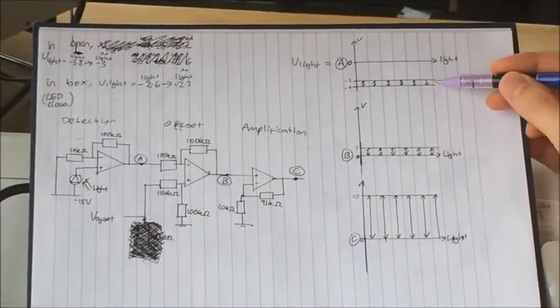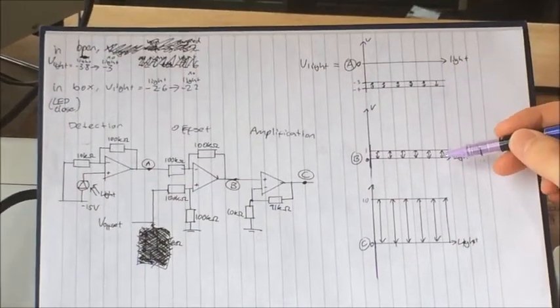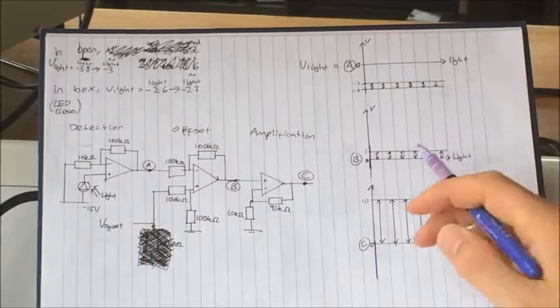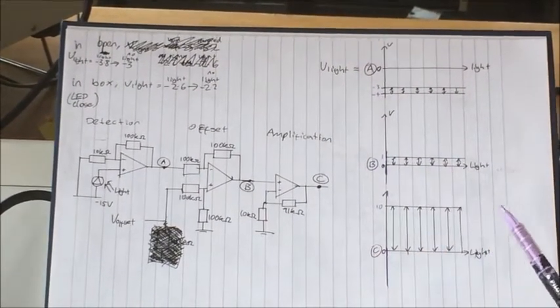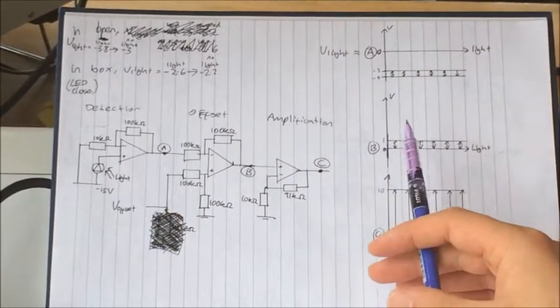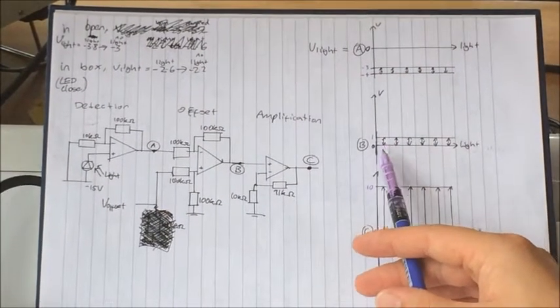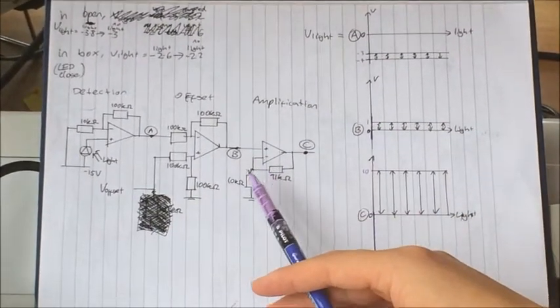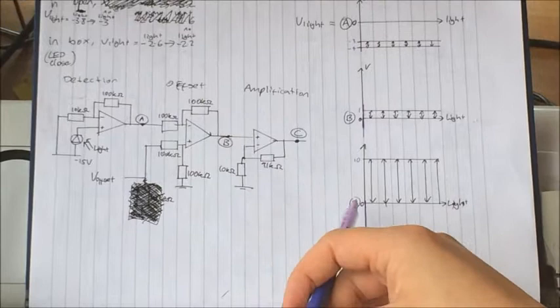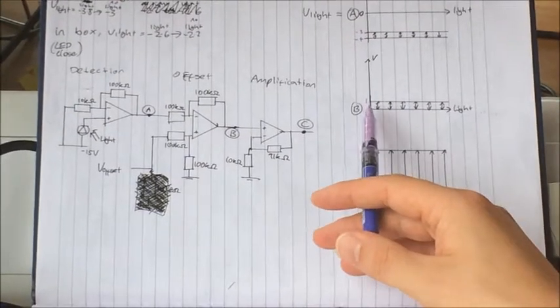This shift moves the voltage levels up so it's zeroed between 0 and 1. When there's little light, there's 0; when there's lots of light, there's 1, or the other way around. That's what we really wanted, but it's still quite a small voltage. So we amplify it again by another factor of 10 to get it between 0 and 10 volts.